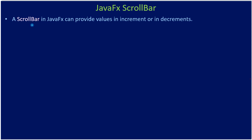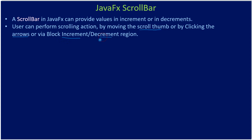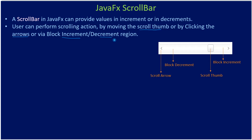A scroll bar in JavaFX can provide values in increments or decrements. The user can perform scrolling action by moving the scroll thumb, or by clicking the arrows. The arrows will be on the left or right side when the scroll bar is in horizontal position. When in vertical position, arrows appear at the top and bottom. This is the scroll thumb, and you can move it left and right to produce different values when scrolling in the track region.